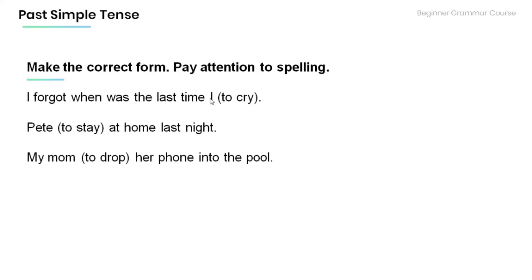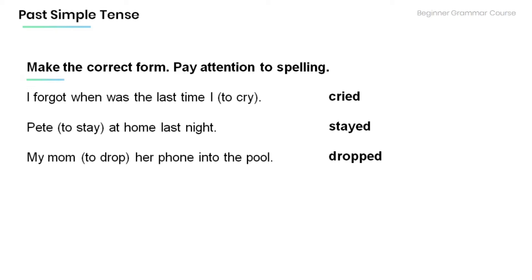Now read the following sentences and make the correct form. Make sure to pay attention to spelling. 'I forgot when was the last time I [to cry].' → 'I cried.' 'Pete [to stay] at home last night.' → 'Pete stayed at home last night.' 'My mom [to drop] her phone in the pool.' → 'My mom dropped her phone in the pool.'